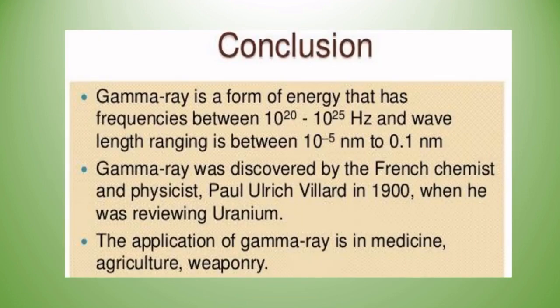In conclusion, gamma rays are a form of energy with frequency between 10²⁰ to 10²⁵ hertz and wavelength ranging from 10⁻⁵ nanometers to 0.1 nanometers.